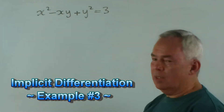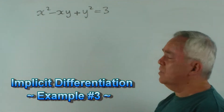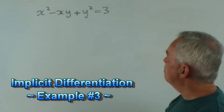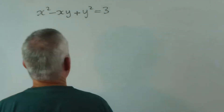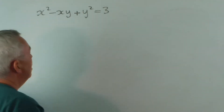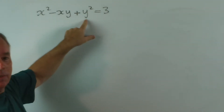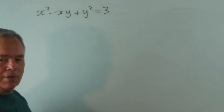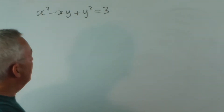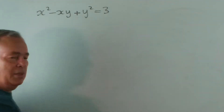G'day and welcome. This will be the last of my brief videos demonstrating how to find the derivatives of implicit functions using implicit differentiation. Here you can see we certainly do not have an equation y equals some function of x. We simply have a quadratic equation in y, and technically we could use the quadratic formula and end up with some rather complicated expression, but we're not going to do that. We're going to leave it in this form and find the derivative implicitly.